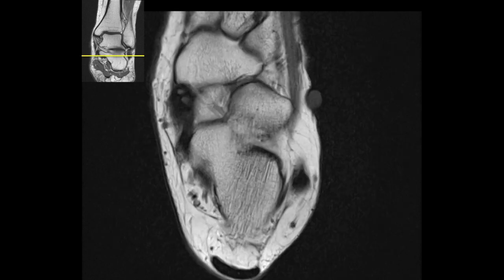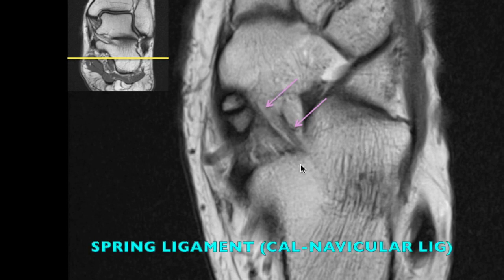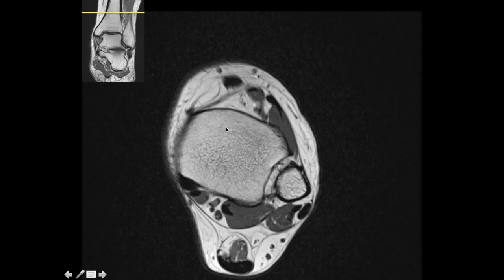Going further inferiorly, you can see a ligament bridging between the navicular bone and the calcaneum — this is the calcaneo-navicular ligament or the spring ligament. Other ligaments are better seen on the coronal images and will be discussed there.